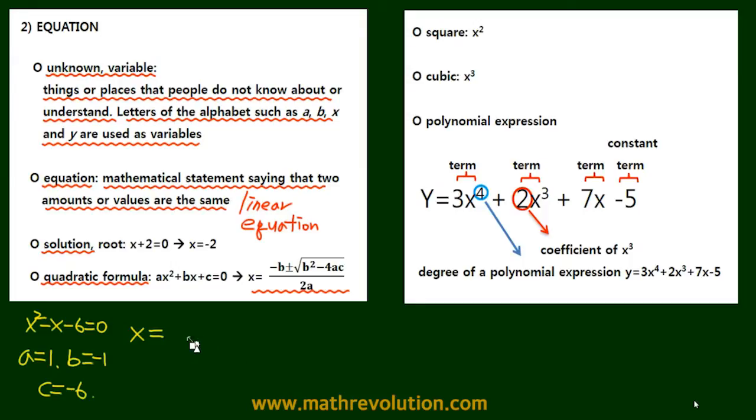starting with the denominator, we have 2A, so 2 times positive 1, because A equals 1, and negative B, so minus minus 1, plus minus the square root of B squared, which is minus 1 squared, minus 4AC,